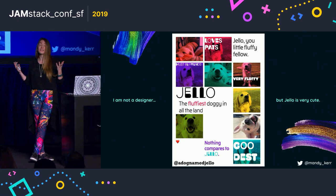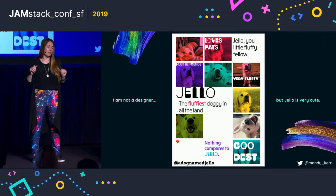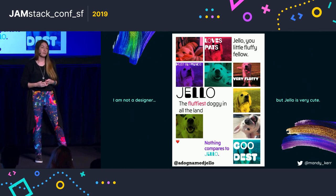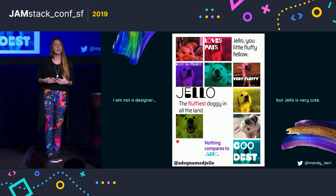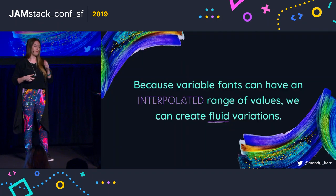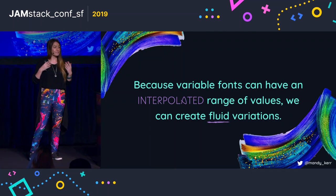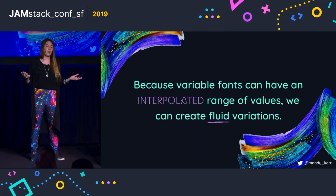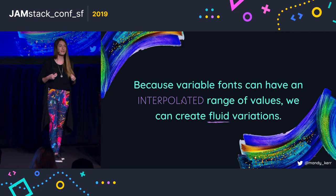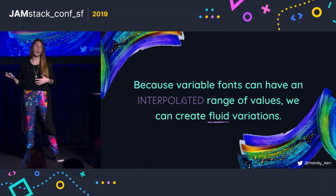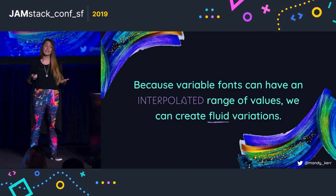We can embrace the learnings of print design as well. CSS grid, blend modes, shapes — these things combined with variable fonts allow us to represent our content in much more interesting and engaging ways. But unlike print, we can embrace the interactivity and flexibility of the web. Because variable fonts have that interpolated range of values, we can start to create animations or transitions with our text, which is something we've never been able to do without SVG, Canvas, or JavaScript. But we can do this with just a little bit of CSS using techniques we're already familiar with.